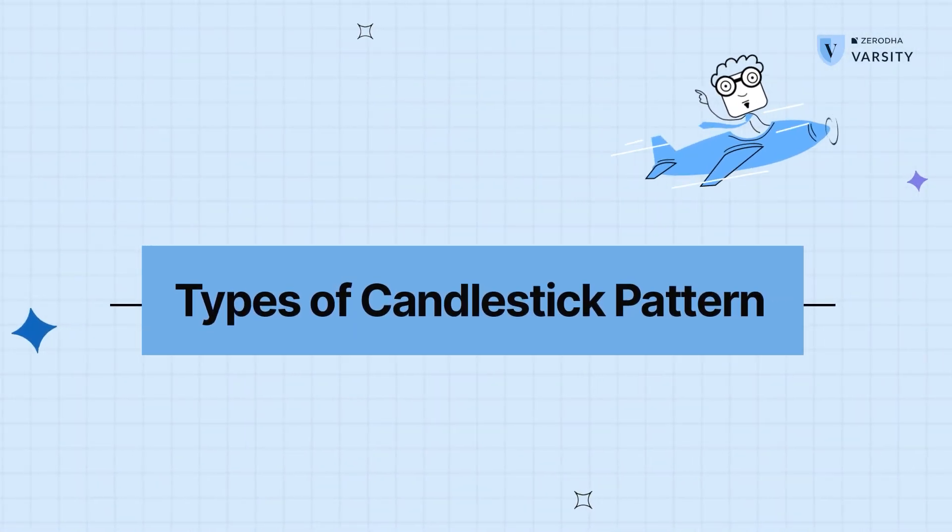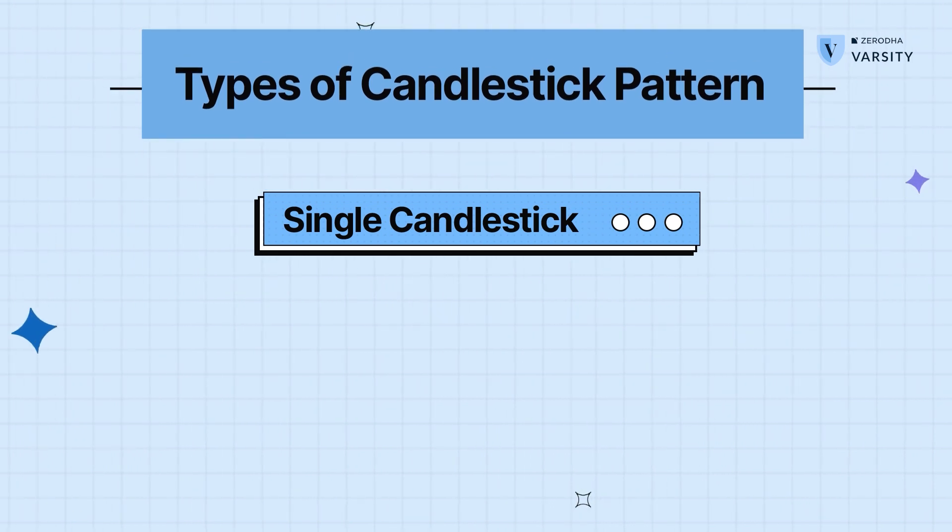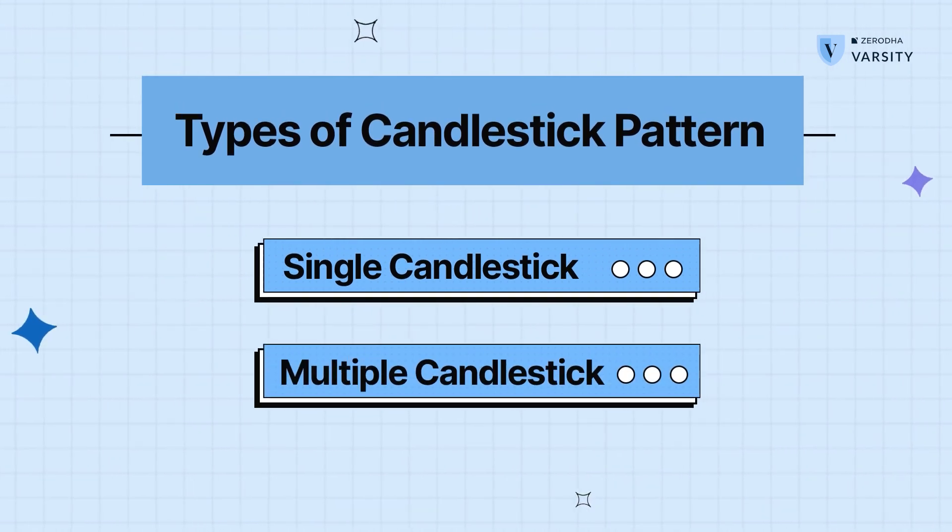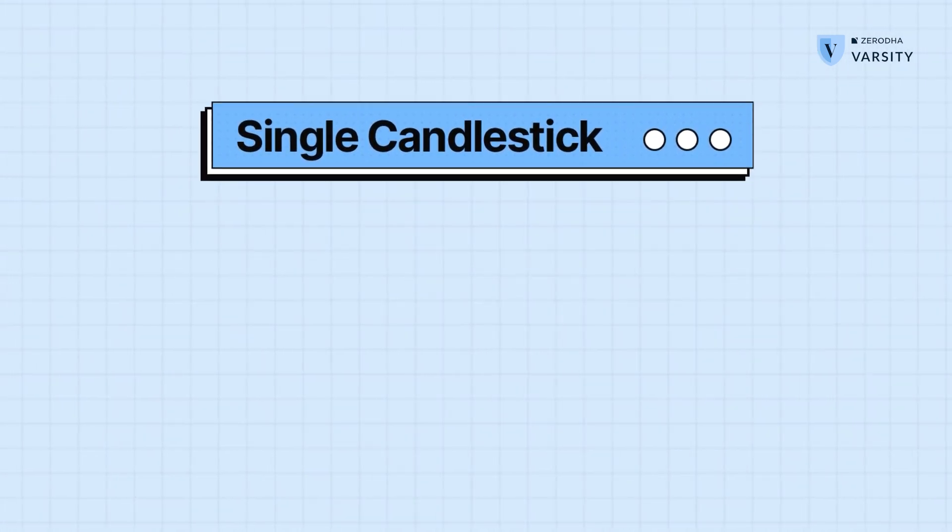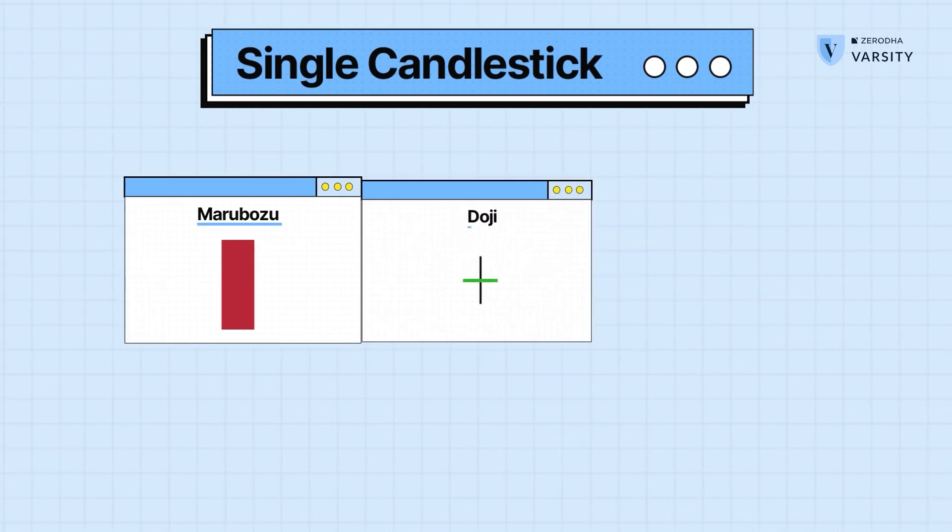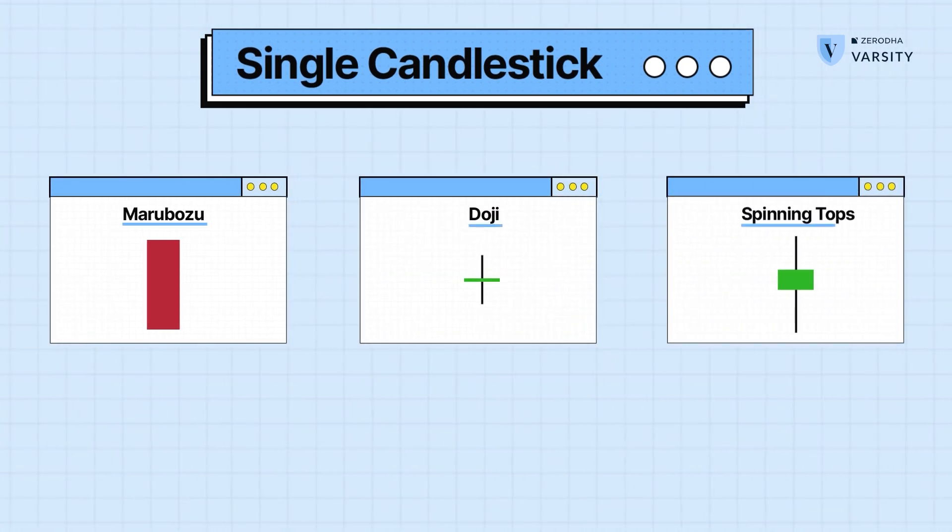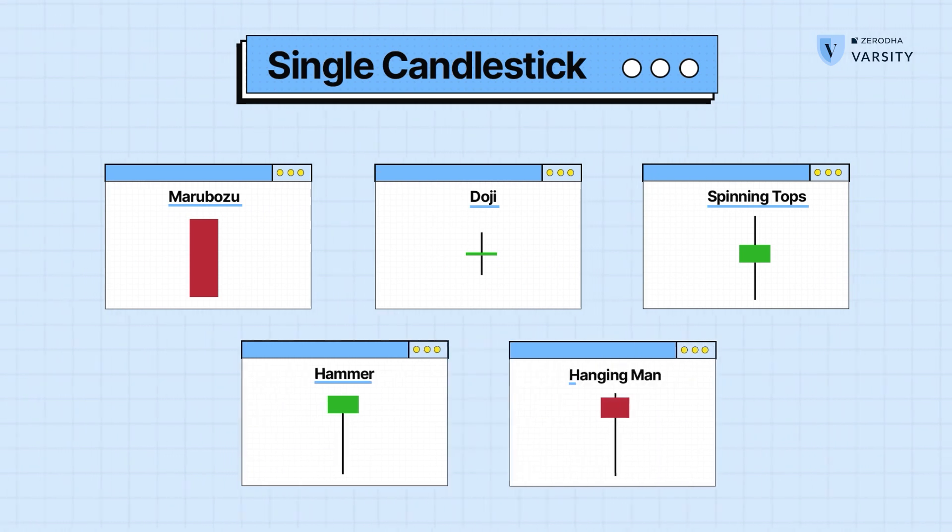So there are two types of candlesticks. You have the single candlestick patterns and the multiple candlestick patterns. Within single candlestick, you have the marubozu, the doji, spinning tops, hammer and the hanging man.